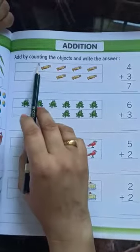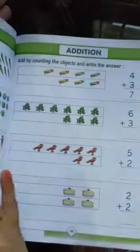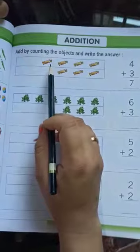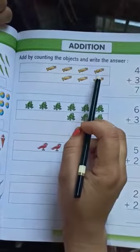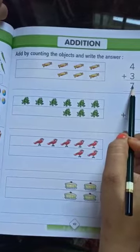First of all, just as you said last time, I have added some. Add means you will count all the objects and write the answer. Okay, same here: 1, 2, 3, 4, 5, 6, 7. I have given 7 answers.